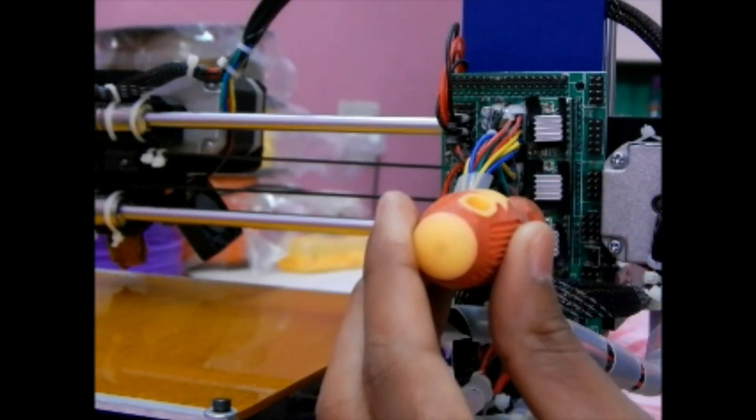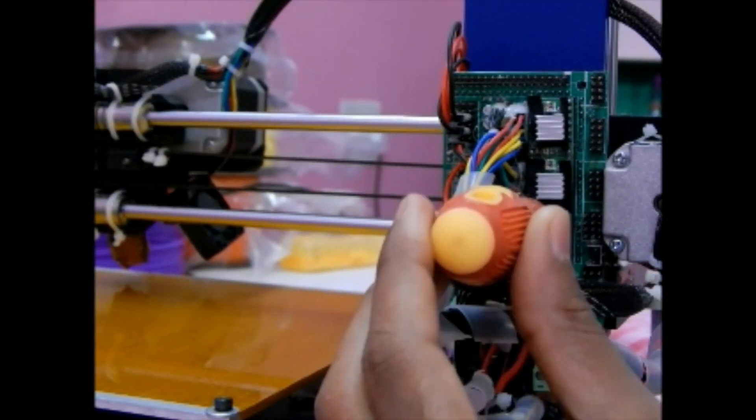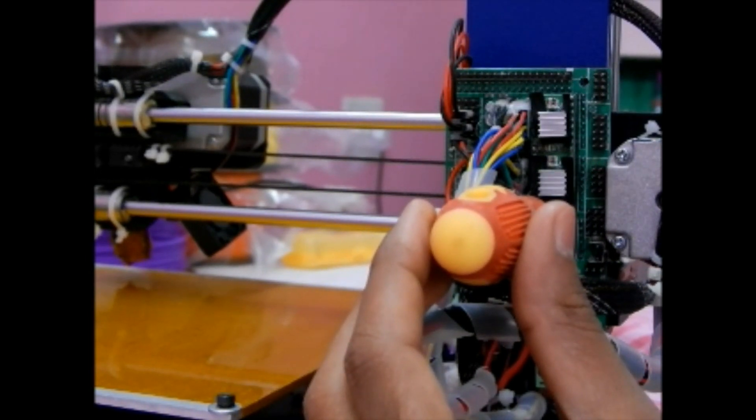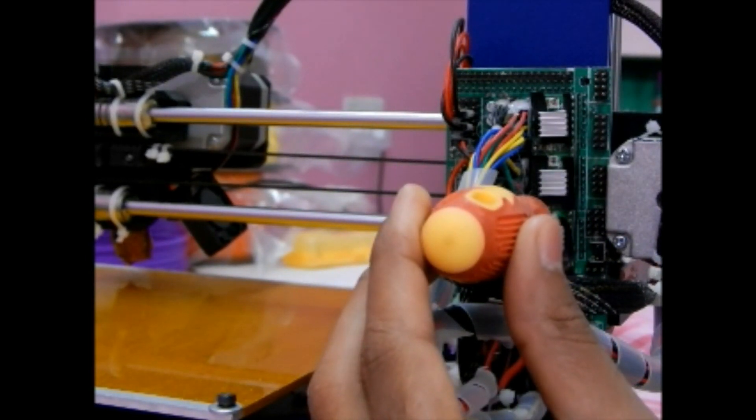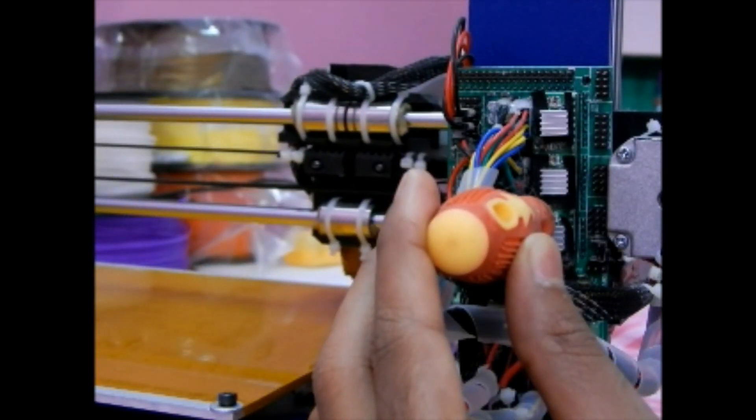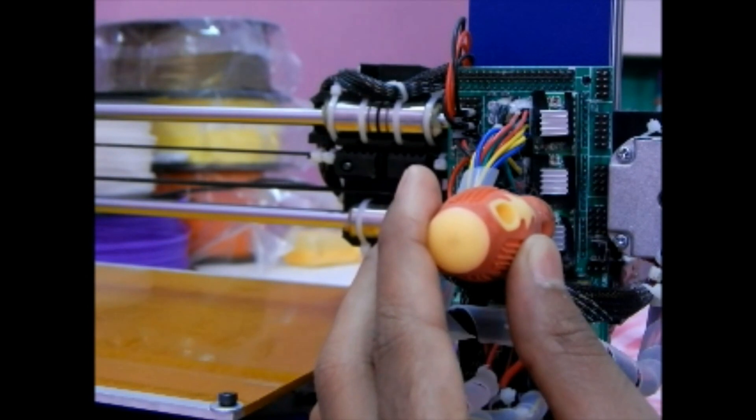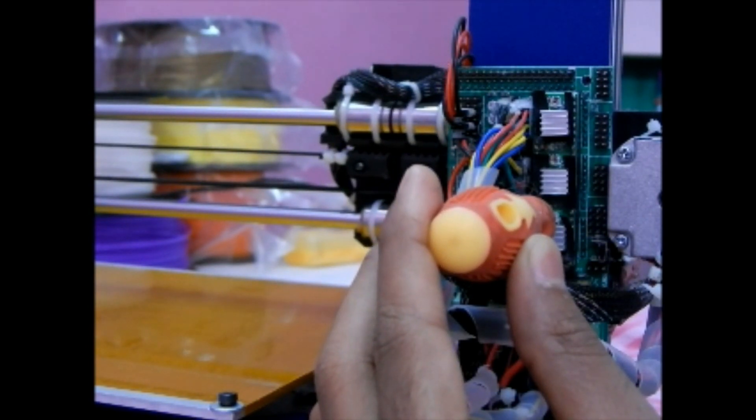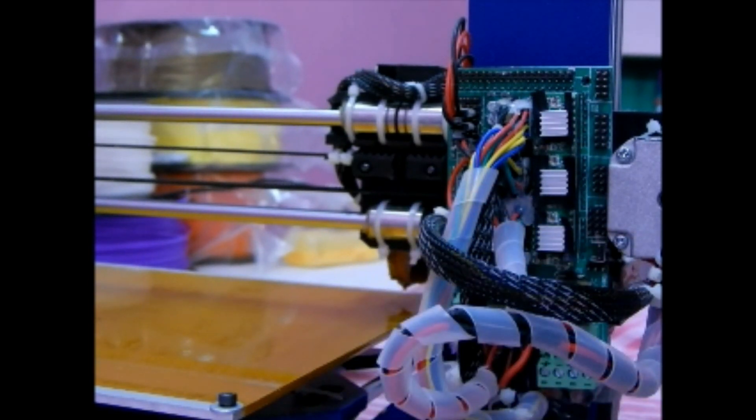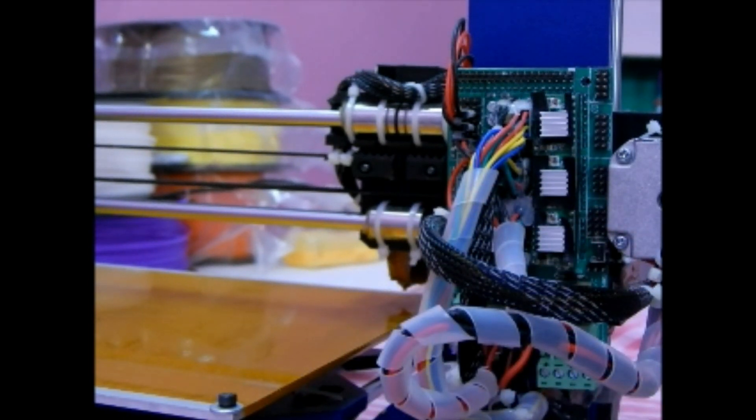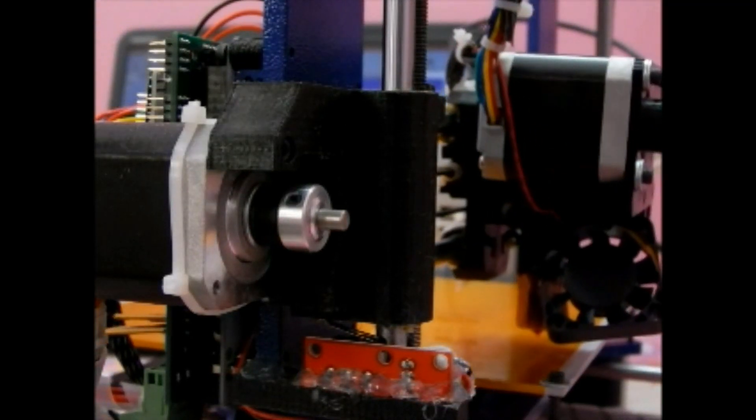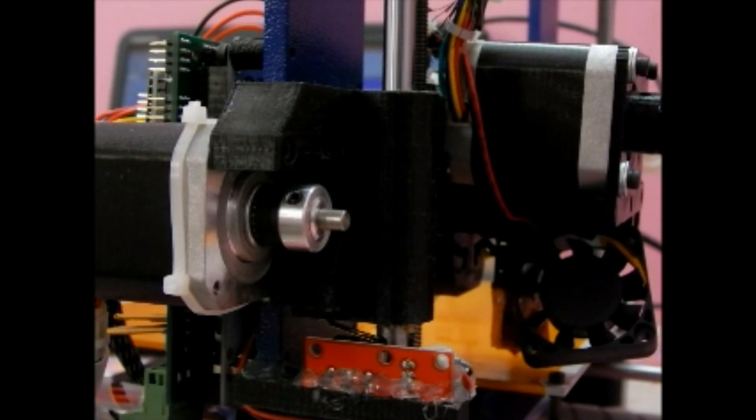In Pronterface, click the X axis home button again. The motor will not move. Now, turn the preset by small steps in clockwise direction or towards your right. The motor will vibrate without moving and make some noise. Turn a little bit more in clockwise direction until the motor moves smoothly without making noise. Then click the X axis home button. The motor should move smoothly without making any noise.